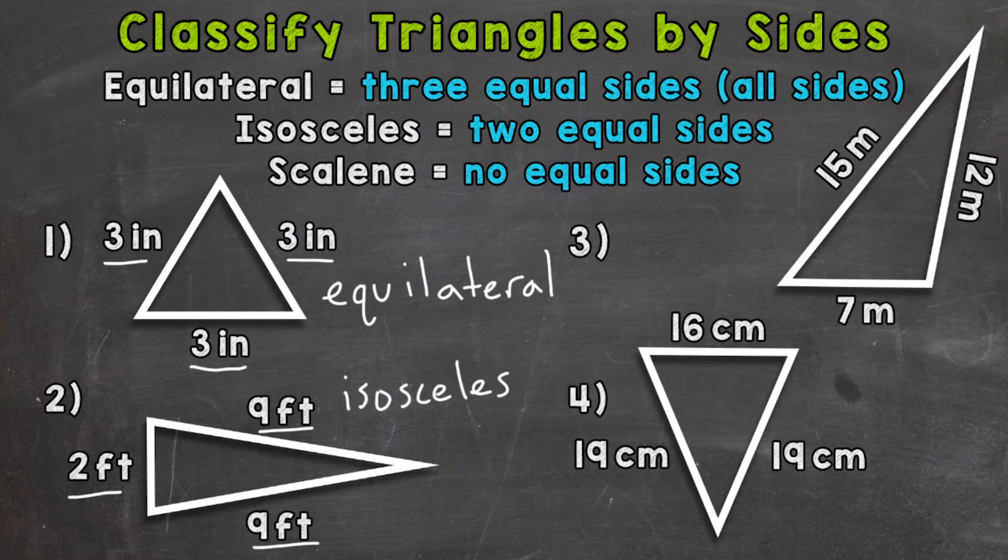Number three, we have 15 meters right here, 12 meters, and then seven meters. So no equal sides. That's an example of a scalene triangle.